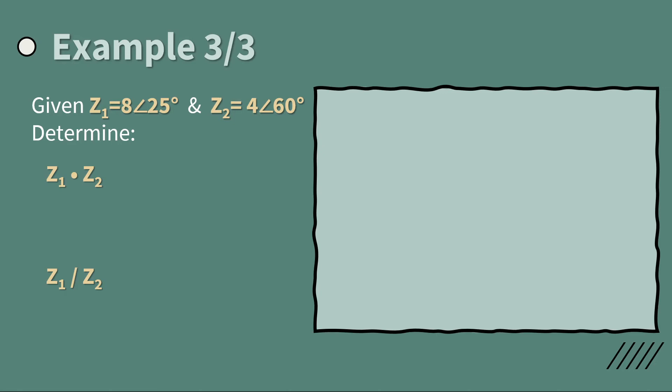In this third example of polar forms, we have the product and the division. For the product, you just simply get the product of individual.